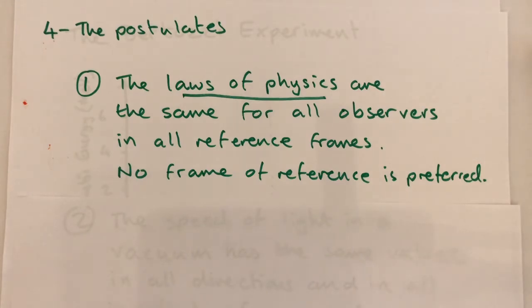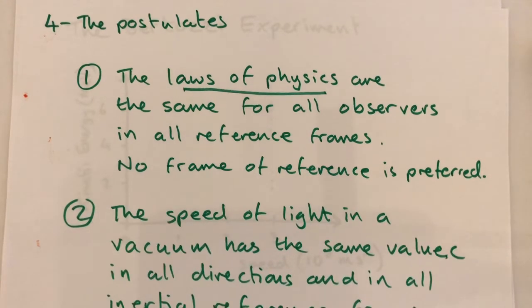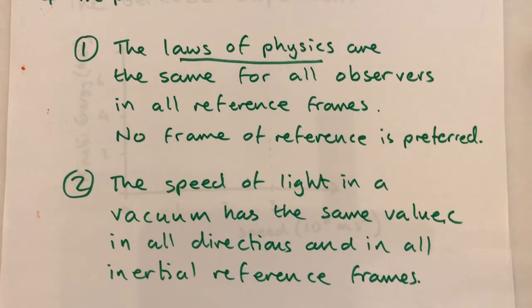Postulate number two reads as follows: the speed of light in a vacuum has the same value c, 3 times 10 to the 8 meters per second, in all directions and in all inertial reference frames.